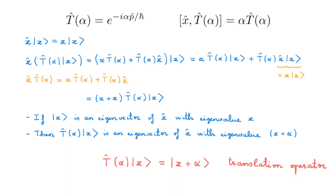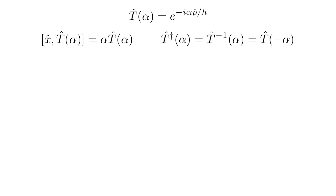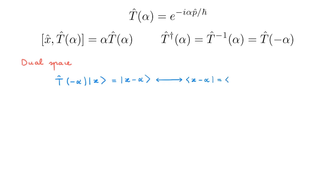It also makes sense now that the inverse of T(α) is T(−α): a translation by α has as its inverse a translation by −α. For the dual space, since T(−α)|x⟩ = |x − α⟩, the corresponding bra is ⟨x − α| = ⟨x|T†(−α) = ⟨x|T(α), using the fact that T†(α) = T(−α).